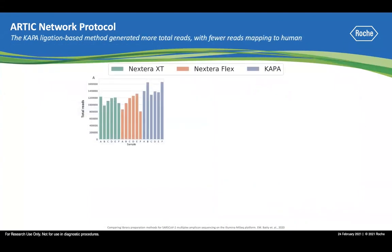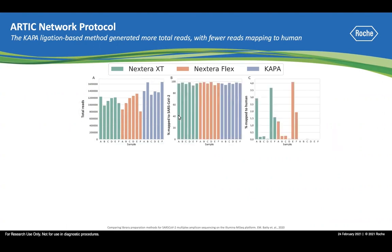Plot A shows the total number of reads obtained from each of the six samples processed by each of the three workflows. The blue represents the KAPA HyperPrep workflow, which has the highest total number of reads. Plot B in the middle shows that most of those reads are mapped to SARS-CoV-2, and the percentage of reads mapping is very similar between the three workflows. However, there is up to 3.5% of reads mapped to humans in libraries prepared using the two tagmentation workflows, and almost zero human reads in KAPA libraries.